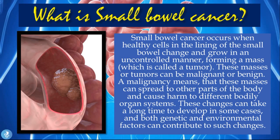So what is small bowel cancer? Small bowel cancer occurs when healthy cells in the lining of the small bowel change and grow in an uncontrolled manner, forming a mass — also called a tumor. These masses or tumors can be malignant or benign. A malignancy means these masses can spread to other parts of the body and cause harm to different organ systems. These changes can take a long time to develop, and both genetic and environmental factors can contribute.